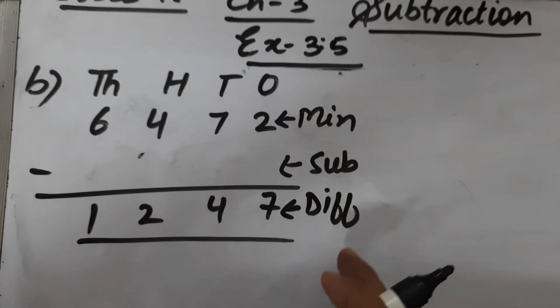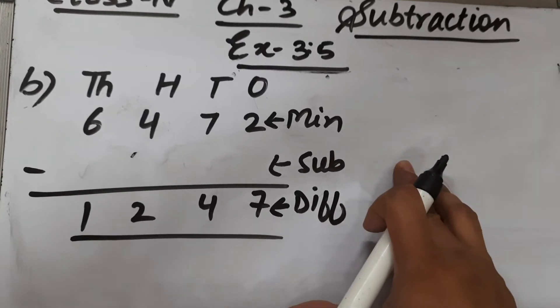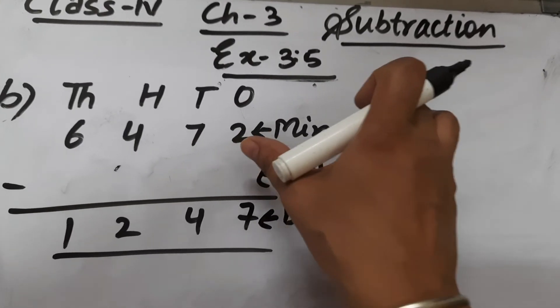We will subtract the difference from the minuend. 6,472 is our minuend and 1,247 is our difference.